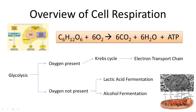All living things respire — plants, animals, bacteria, fungi, protozoans — all find a way to produce energy to do work. The answer is through a process called cellular respiration. Cellular respiration takes place in the plasma membranes of smaller cells like bacteria, but in plants and animals it takes place inside organelles located in the cytoplasm called mitochondria.